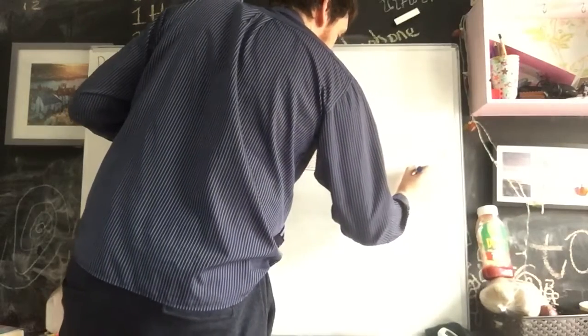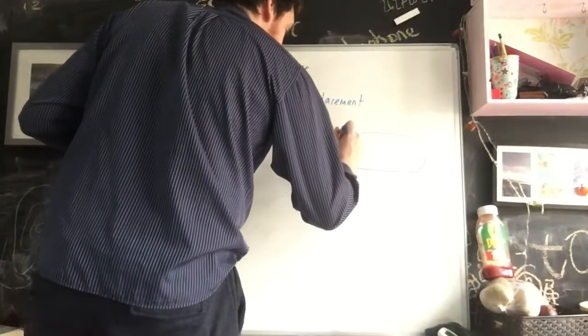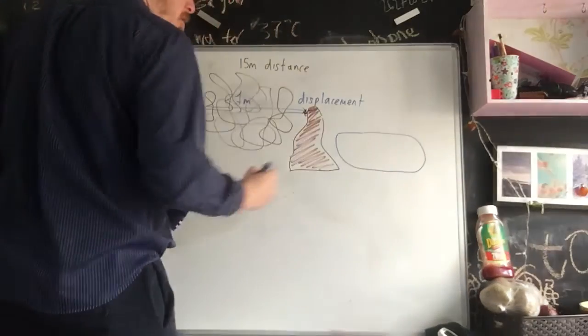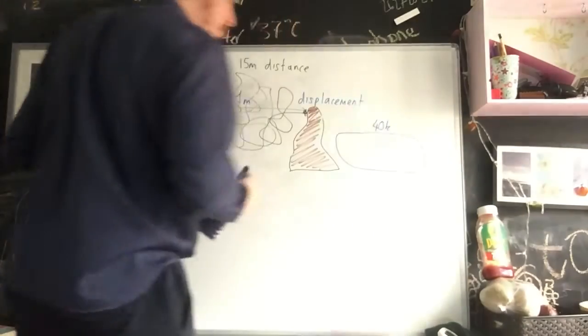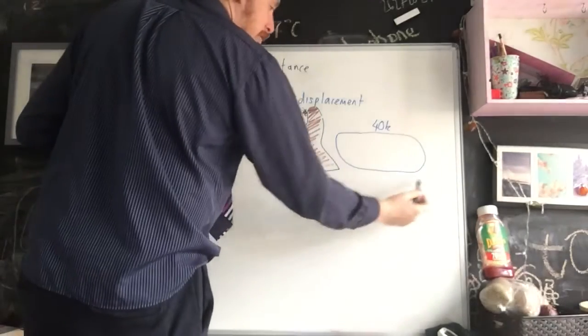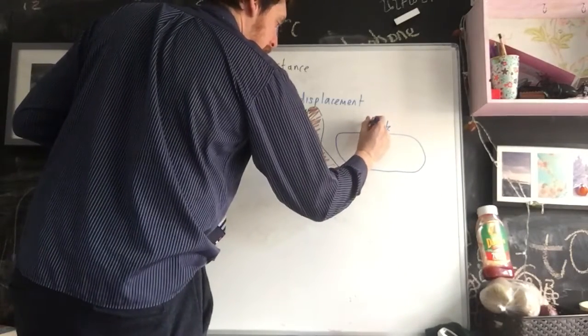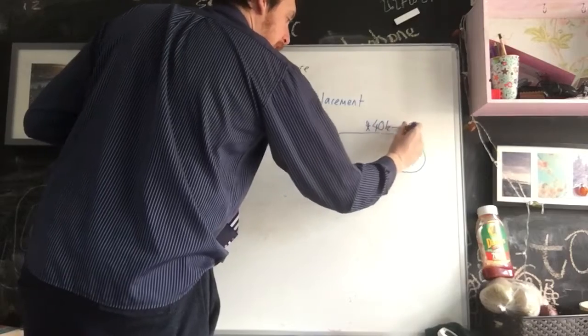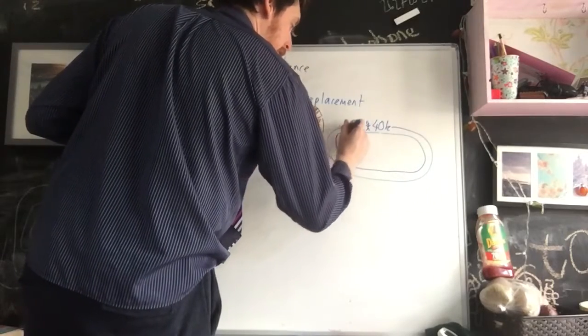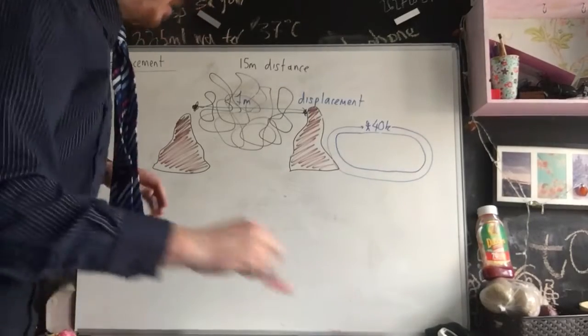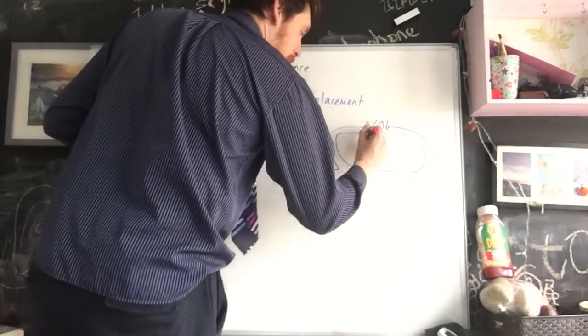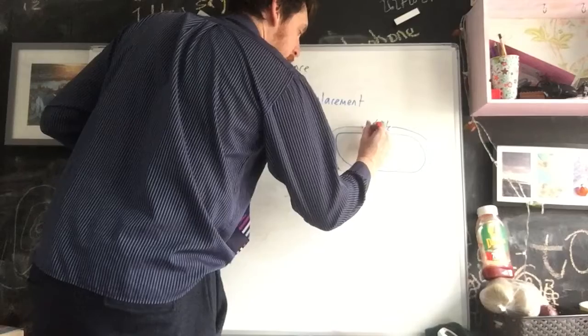So if you've got an expert runner such as Mo Farah running 40k and going around and around the track, the distance that they've run has been 40k as they've run that track several times. If their endpoint is the same as the start point, then the worst thing that you could tell...